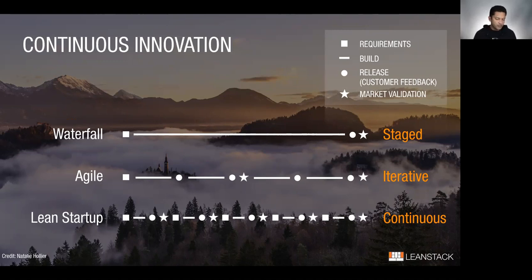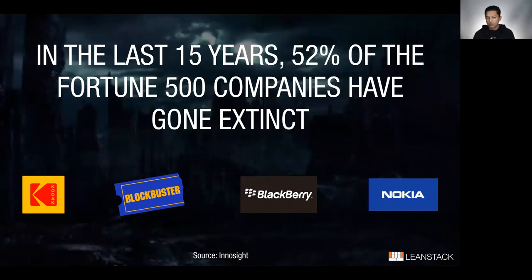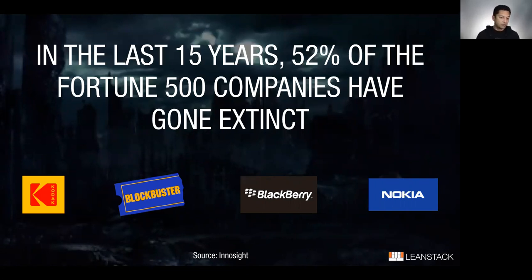Now if you stumble — and we've seen this with many big companies over the last 10 to 15 years — it's not just one or two products that fail. Their entire business models can get disrupted. Studies have shown that in the last 15 years, many Fortune 500 companies have gone extinct. The lifespan of companies used to be 75 years; now it's down to 15, and there's a prediction that will shrink even further.